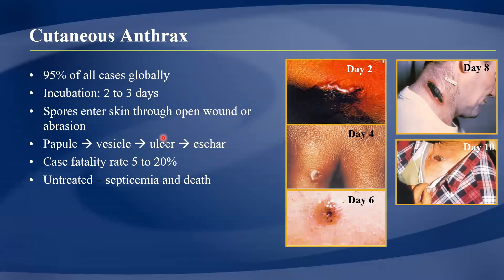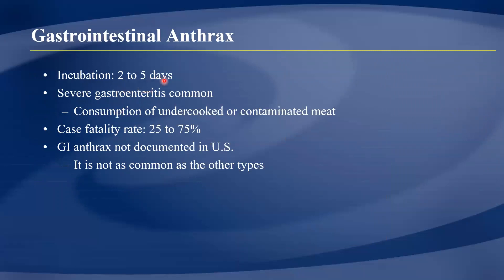Cutaneous anthrax, resulting from cutaneous transmission, constitutes 95% of all cases globally. The incubation period is two to three days, after which a papule develops into a vesicle, then an ulcer, then an eschar — a characteristic blackish lesion. The case fatality rate is not very high for this form. Gastrointestinal anthrax has an incubation period of two to five days and is caused by consumption of undercooked or contaminated meat, causing severe gastroenteritis with a case fatality rate of 25–75%.